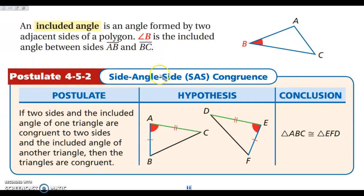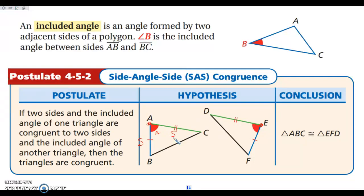We have Side-Angle-Side, and it's going to go in this order: it has to be a side, then the included angle, then another side. Notice that my blue sides are congruent, my green sides are congruent, and the angle where those two sides meet — those are congruent. So it's a side, an angle, and then another side. That is enough to show that my two triangles are congruent if I know those two pairs of sides are congruent as well as the angle in between them.